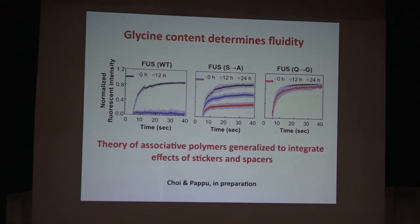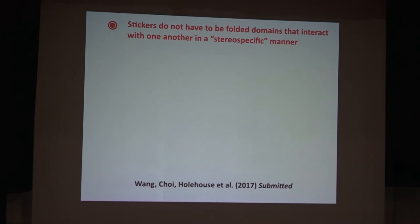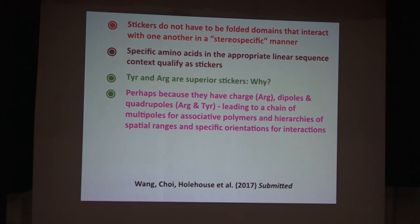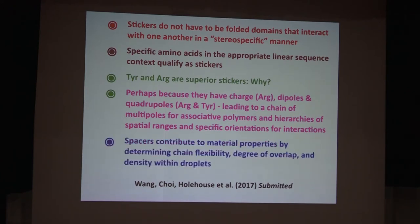We are in the process of integrating the idea of spacers into the theory for associative polymers. Where we are: stickers do not have to be folded domains that interact in a stereospecific manner — specific amino acids in the sequence qualify as stickers. Tyrosine and arginine are superior because from a classical standpoint, arginine has a charge but also dipoles and quadrupoles, as does tyrosine in terms of a quadrupole moment. The way to think about these protein sequences is as chains of multipoles, giving hierarchies of spatial ranges and orientations for interactions. Spacers contribute to material properties by determining chain flexibility, degree of overlap, and density within droplets.